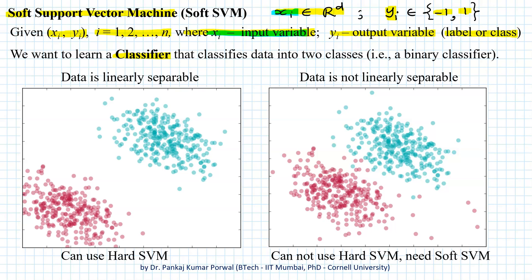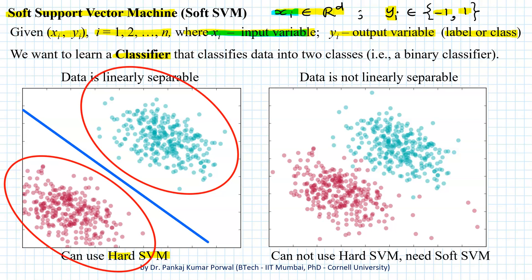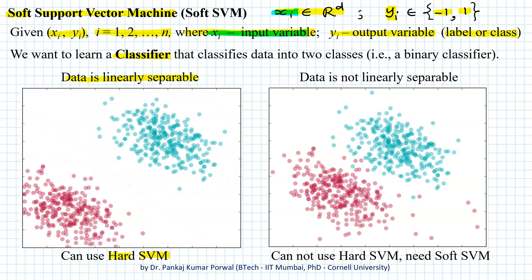The hard support vector machine assumes that data is linearly separable, but this is a difficult condition to achieve in real life because data is often intermingled near the decision boundary. So we cannot use hard SVM for most realistic data, and we have to relax the condition of linear separability. That algorithm is called soft support vector machine.